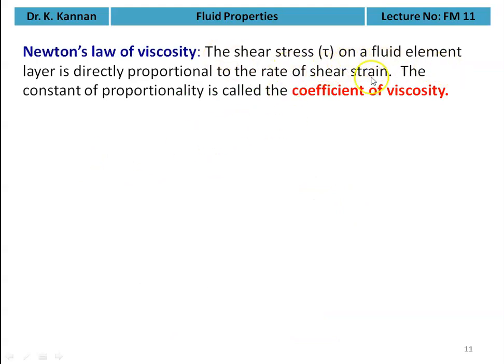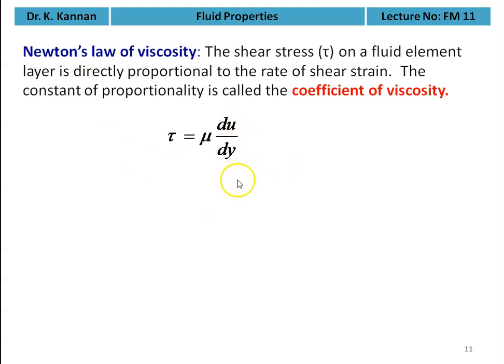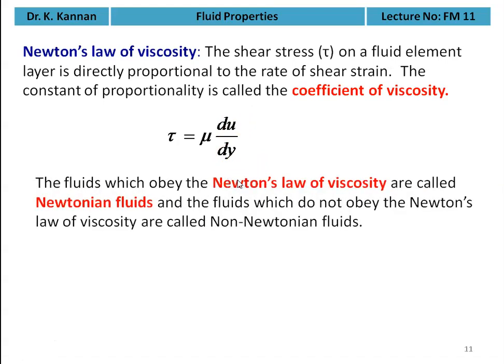The shear stress τ on a fluid layer is directly proportional to the rate of shear strain. The constant of proportionality is the coefficient of viscosity. So τ = μ × du/dy — this is Newton's law of viscosity. The fluid which obeys Newton's law of viscosity is called a Newtonian fluid. The fluid which does not obey Newton's law of viscosity is called a non-Newtonian fluid.